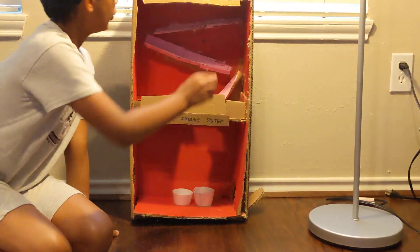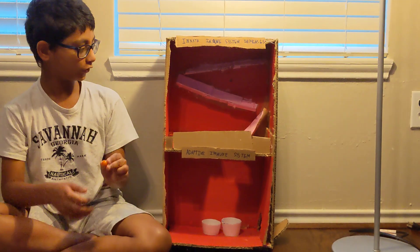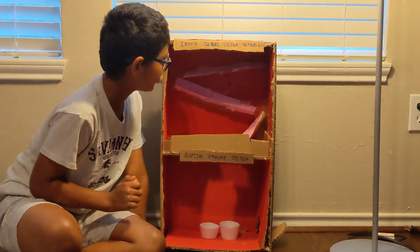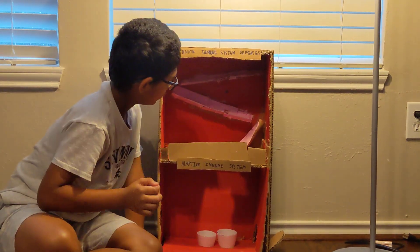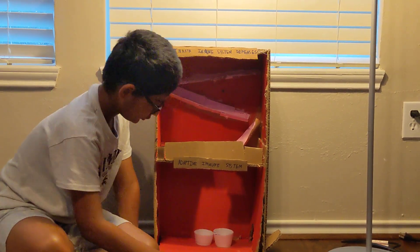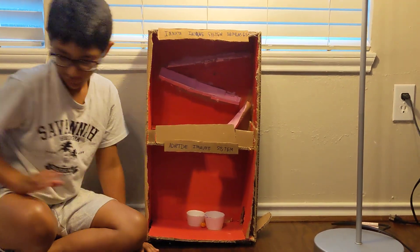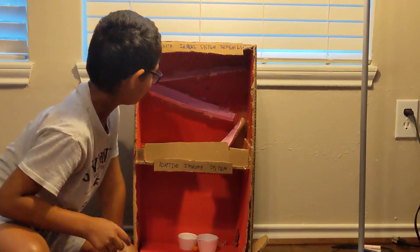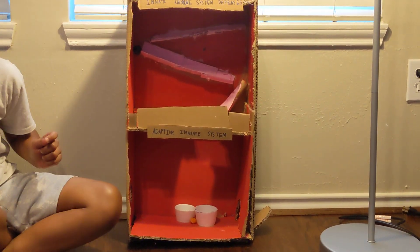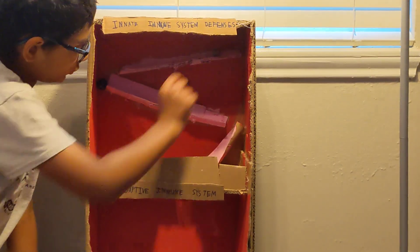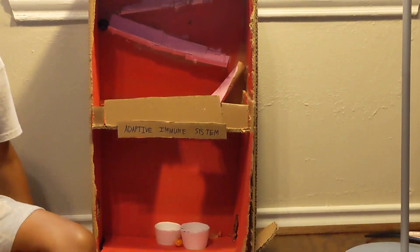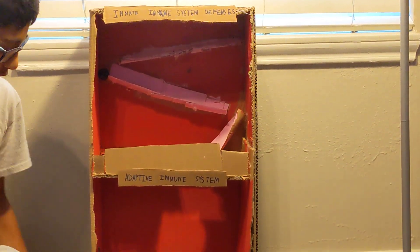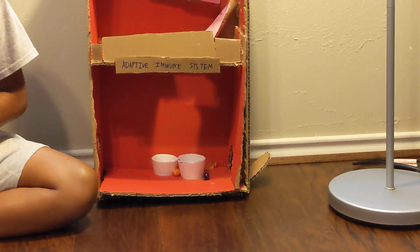These marbles will represent germs. Let's see what happens when these germs enter the innate immune system. This is now in the bloodstream — it got past the first line of defense. Let's see what happens with the big germ. It got stuck. These germs are getting stuck from all of the defenses. Looks like another germ is in the bloodstream now.